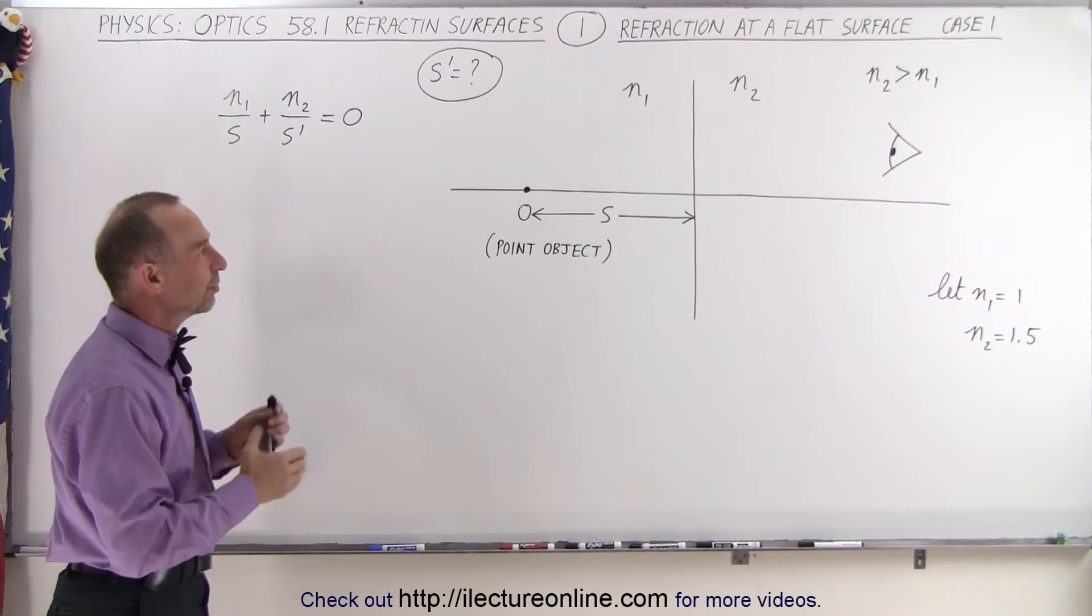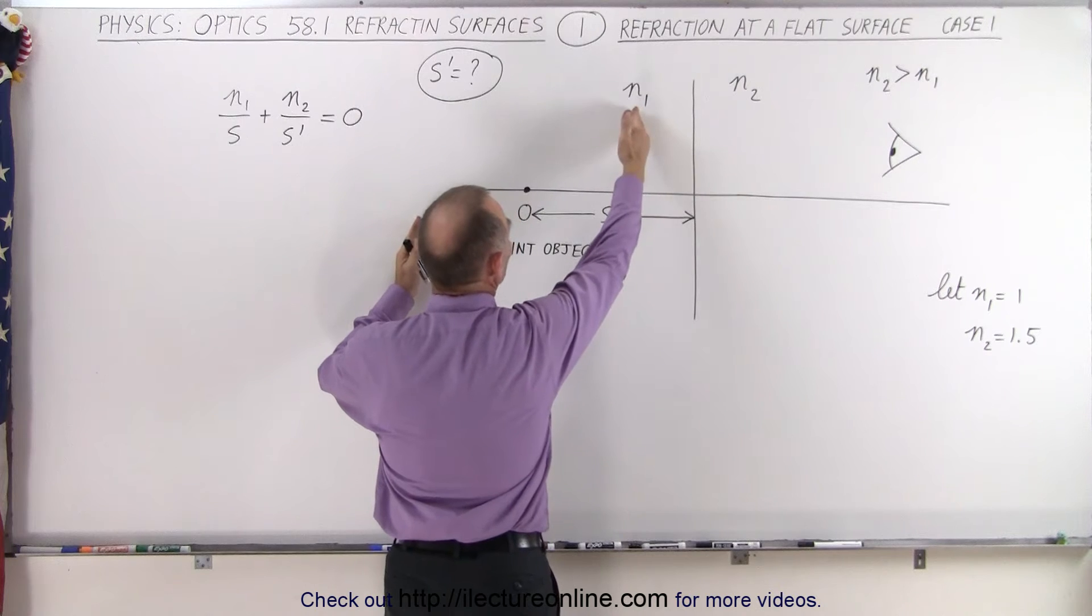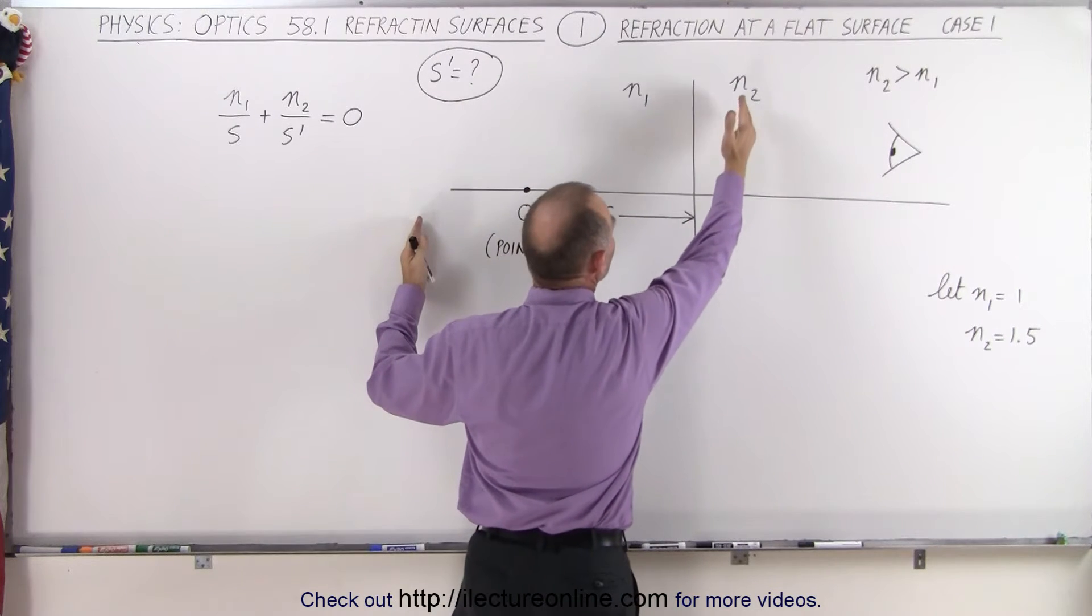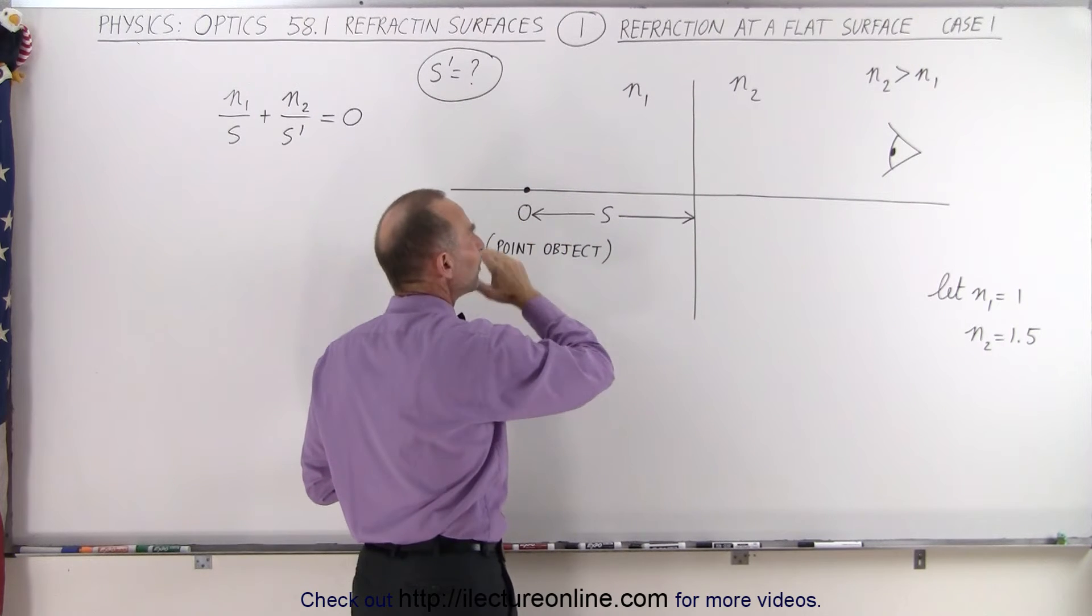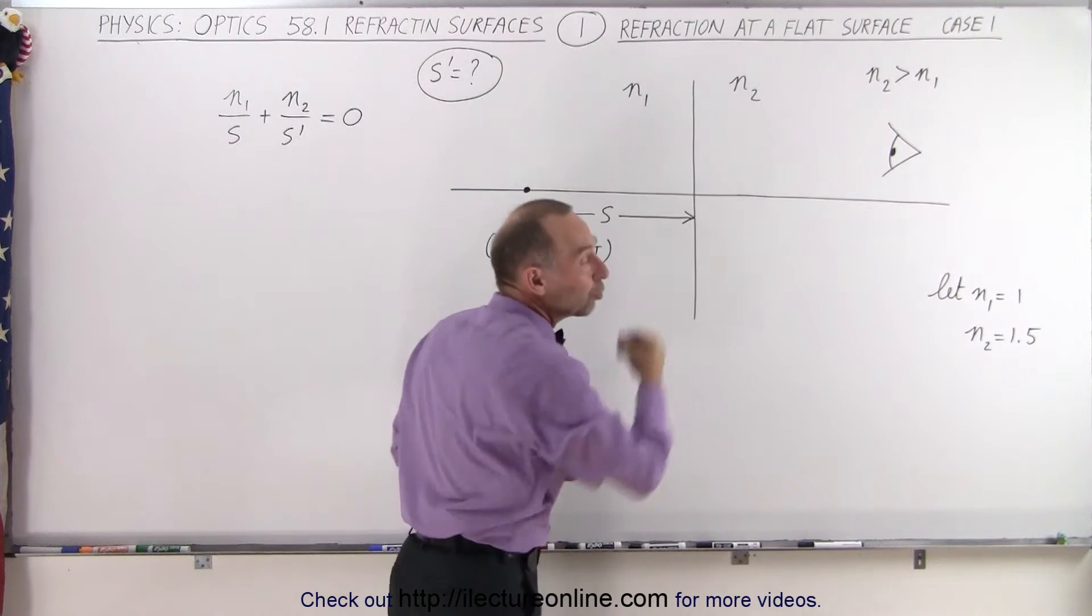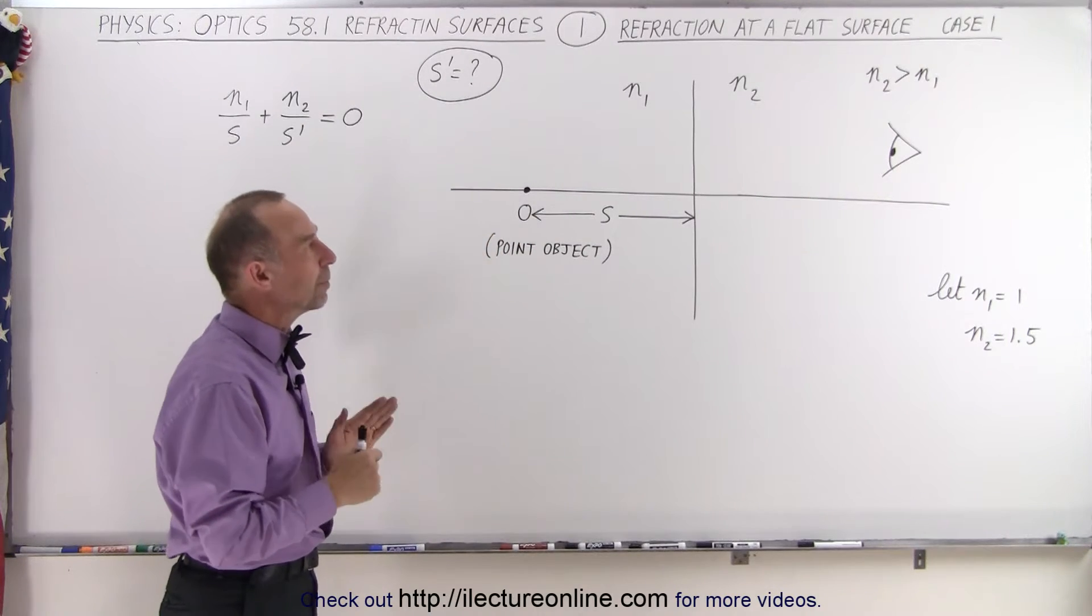So what we have here is two materials. On the left side we have an index of refraction n1, on the right side index of refraction n2. On the left side we have a point object right there, and we want to figure out where the image will appear and how far it will be from the boundary to the image.